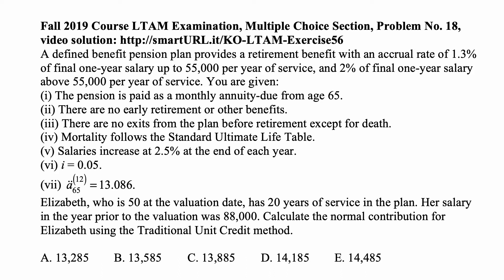You are given that the pension is paid as a monthly annuity due from age 65. There are no early retirement or other benefits. There are no exits from the plan before retirement except for death.